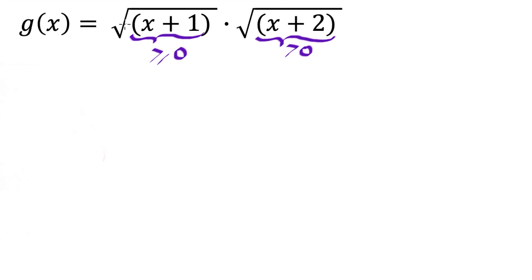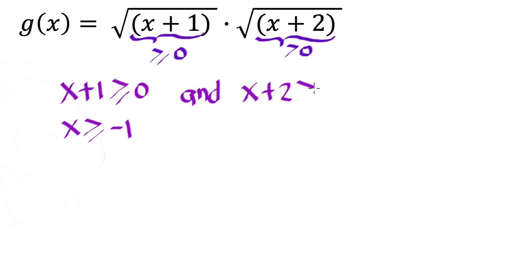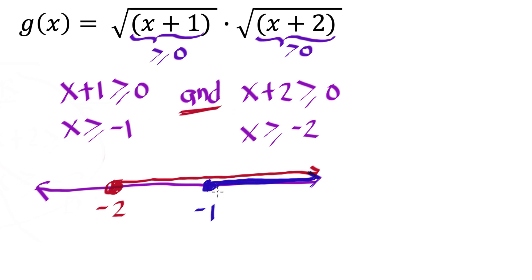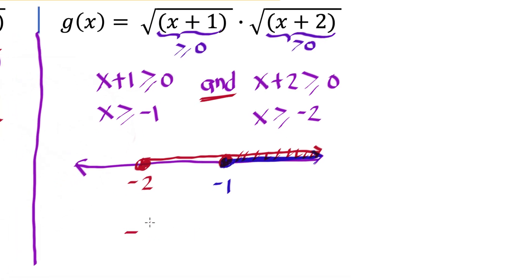Now for the domain of g: (x+1) must be greater than or equal to 0, so x ≥ -1; and (x+2) must be greater than or equal to 0, so x ≥ -2. Since we need both conditions (AND), we take their intersection. The intersection is from -1 to positive infinity, so the domain of g is [-1, +∞).